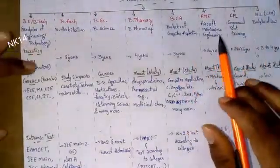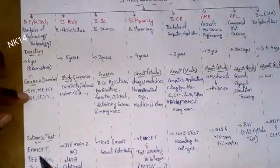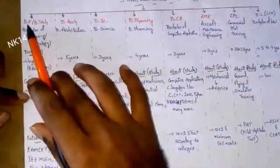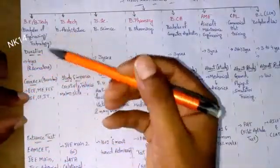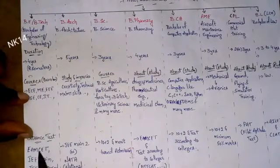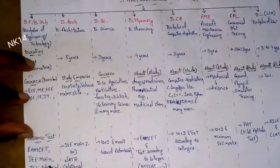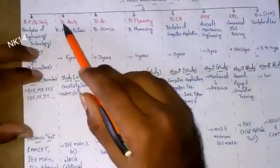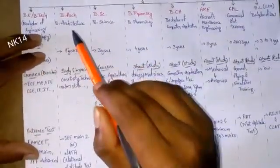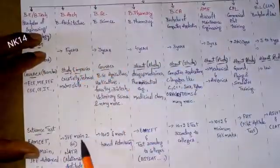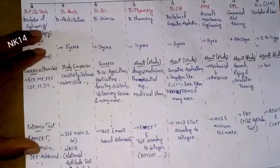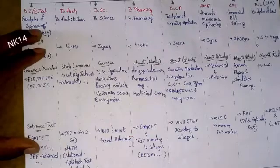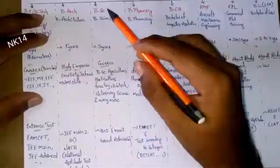Now let's see what entrance tests you need to write for these fields. For BE and BTech, you have to write MSET, JEE Mains, or JEE Advanced. For Bachelor of Architecture, you have to write JEE Mains Paper 2 or NATA — NATA means National Aptitude Test in Architecture.